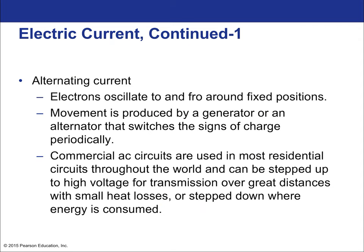Alternating current is when electrons oscillate to and fro around fixed positions — acting kind of like a mass attached to a spring, sloshing back and forth. The movement is produced by a generator or alternator that switches the sign of the charge periodically, either pulling or pushing the electrons. Commercial AC circuits are used in most residential circuits throughout the world and can be stepped up to higher voltages for transmission over greater distances with small heat losses, or stepped down where energy is consumed. One big advantage of AC is its ability to be stepped up or stepped down using a transformer — an inductive process we'll discuss in a later chapter.